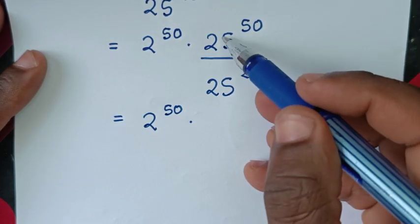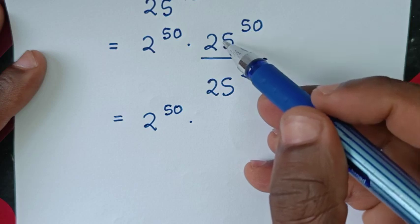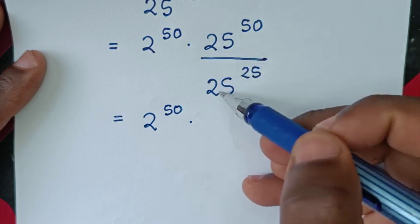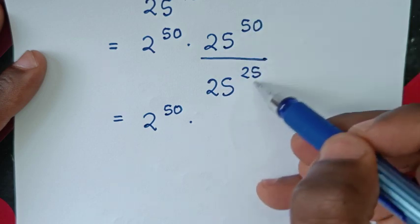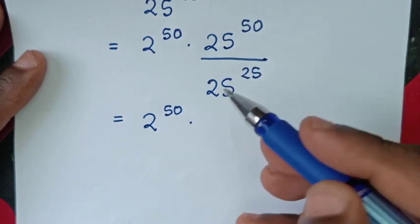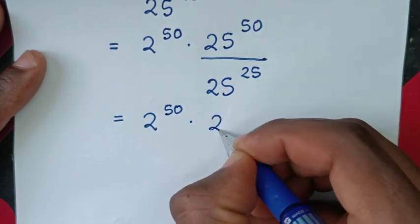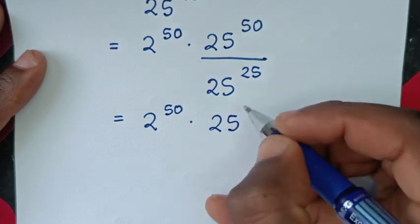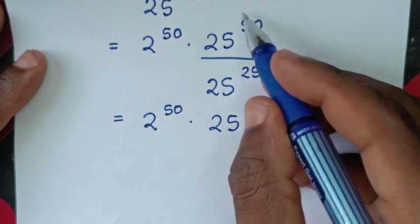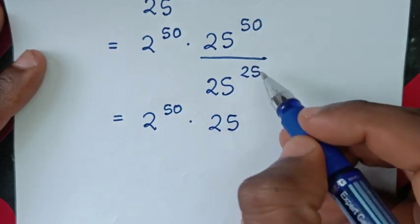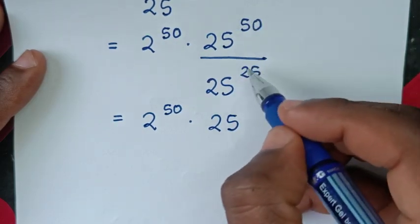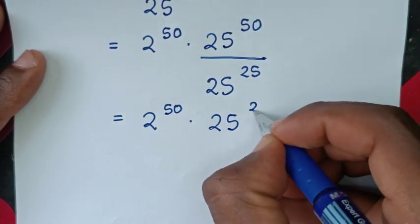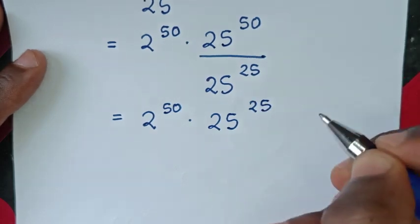This is a division of exponents with the same base of 25 but different powers, so it becomes 25 power of 50 minus 25, and 50 minus 25 is 25.